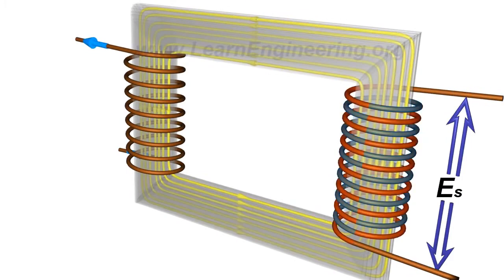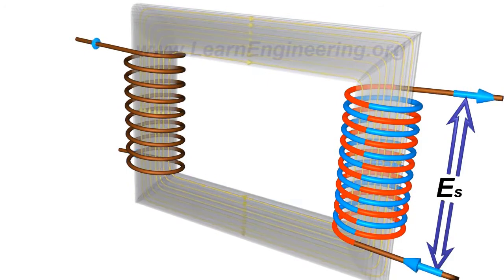Since the turns are arranged in a series, the net EMF induced across the winding will be the sum of the individual EMFs induced in each turn.